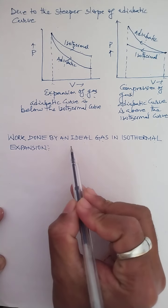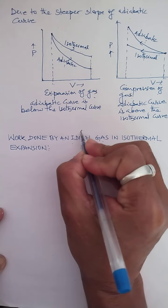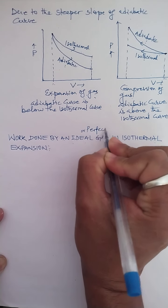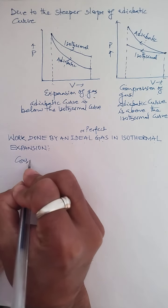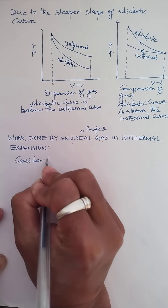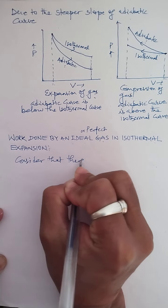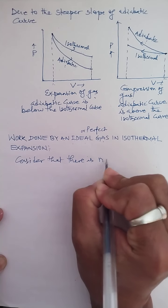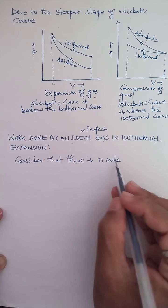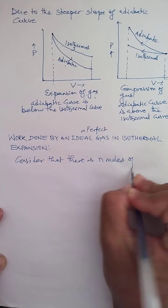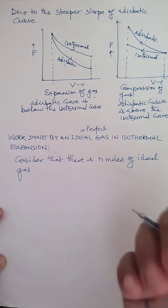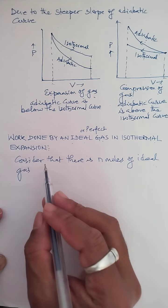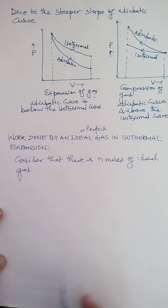The type of gas we take is an ideal gas, also known as a perfect gas. I consider there is n moles of ideal gas. Now this n can be of any value — it can be 2 moles, 3 moles, 10 moles, any number. But I consider n moles of ideal gas.